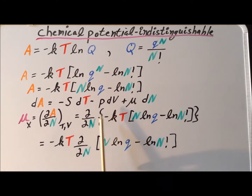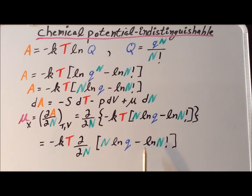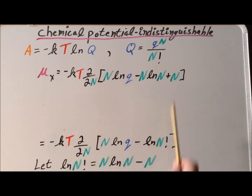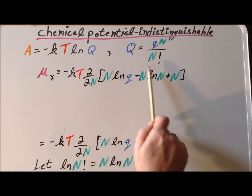Next, we pull the minus KT through the differential operator, which we are allowed to do because neither K nor T involves N. We are left with minus KT times the derivative with respect to N of the quantity N times the natural log of q minus the natural log of N factorial. This is a tricky expression, so we again apply Stirling's approximation, replacing the natural log of N factorial with N times the natural log of N minus N, and insert this into our derivative.